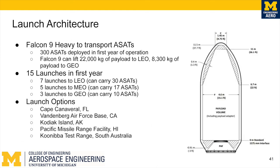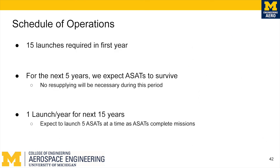In terms of launch architecture, we will need a heavy launch vehicle such as the Falcon 9 to transport the ASATs. We would like to deploy about 300 ASATs in the first-tier operation. The Falcon 9 includes about 22,000 kilograms of payload to LEO and 8,300 kilograms to GEO. We plan 15 launches in the first year: seven launches to LEO each carrying 30 ASATs, about five launches to MEO each carrying 17 ASATs, and three launches to GEO each carrying about 10 ASATs, for a total of 300 ASATs. Our launch sites span about five locations across the country to ensure adequate coverage of all required inclinations across the globe. After that first year, no resupply or maintenance will be required during that period. After the five-year period, we expect one launch per year for the next 15 years, launching about five ASATs at a time.